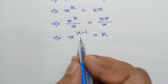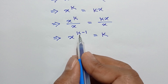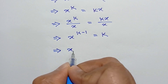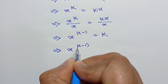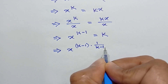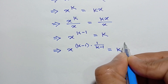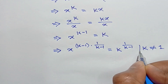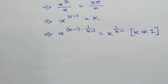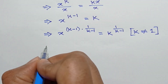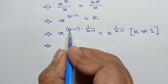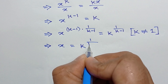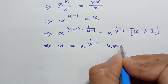Now consider k is not equal to 1, so k minus 1 is not equal to 0. Raising both sides to the power 1 over k minus 1, we get x is equal to k to the power 1 over k minus 1, where k is not equal to 1.